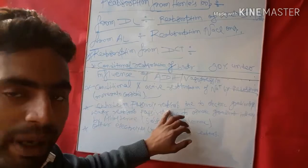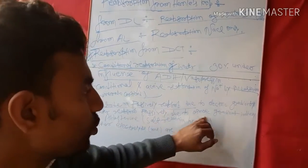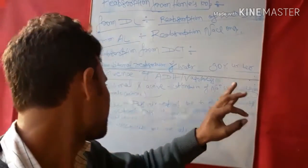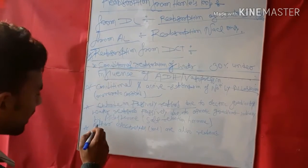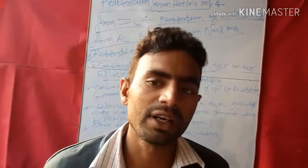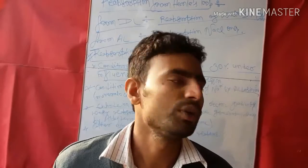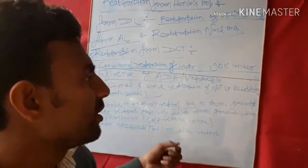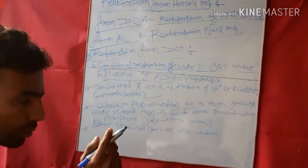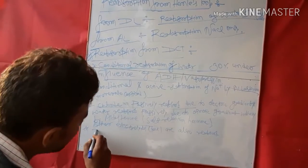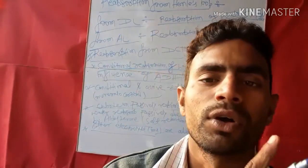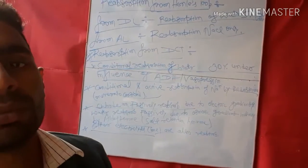Third: chloride ions are passively reabsorbed due to the electrical gradient. Fourth: water reabsorption also occurs passively due to the osmotic gradient, indirectly influenced by aldosterone. Aldosterone is also known as a salt retention hormone.